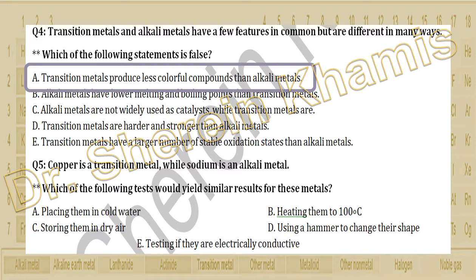Alkali metals give a huge number of different colors. Comparing to transition metals — in their ordinary state, transition metals are less colorful — but when they form oxidation states or ions, they give color. Here we are talking only about the ordinary state.